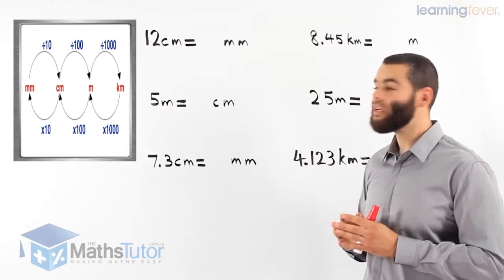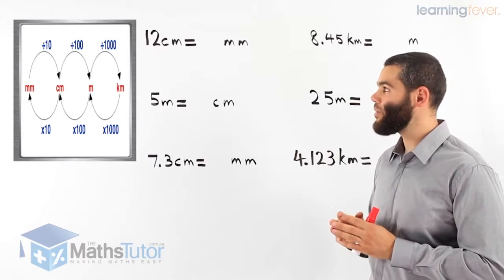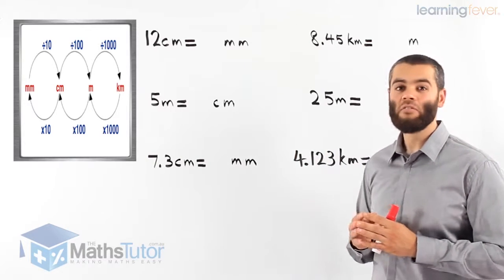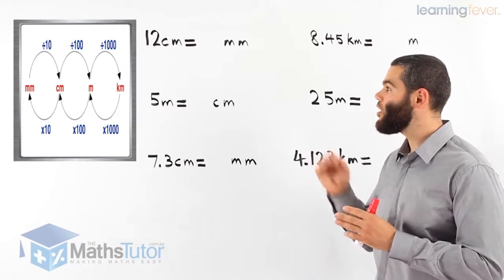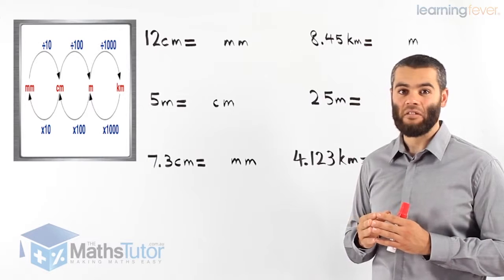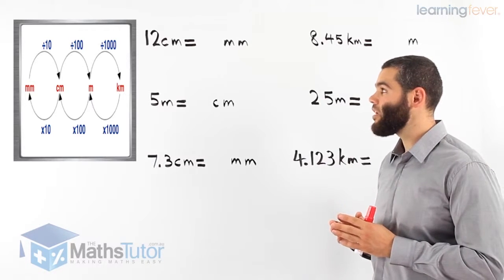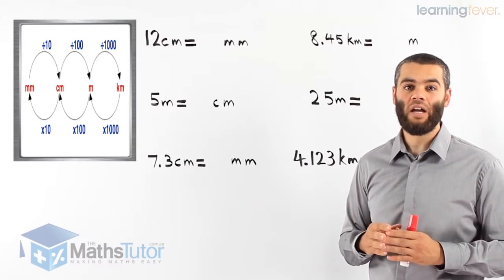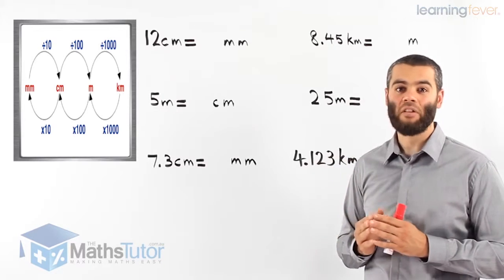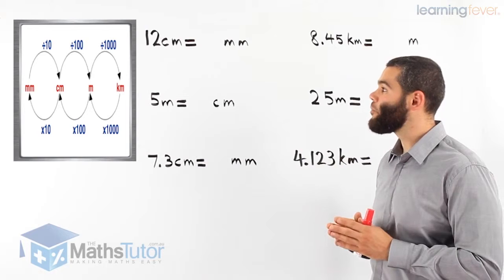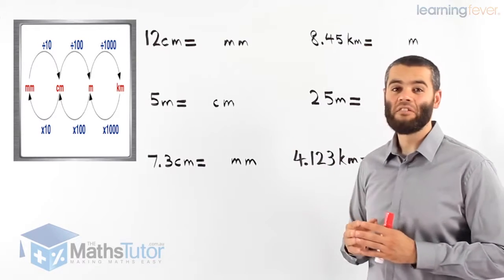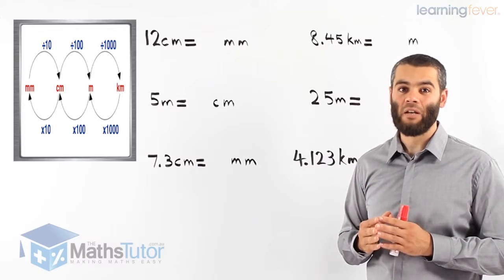If we are going from millimetres to centimetres, we divide by 10. When we go from centimetres to metres, we divide by 100. And when we go from metres to kilometres, we divide by 1000. Going back, it's the opposite — the opposite of divide is times. So going from kilometres to metres is times 1000, from metres to centimetres times 100, and from centimetres to millimetres times 10.